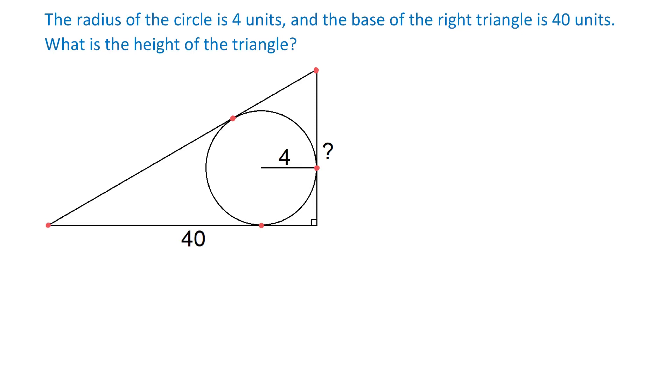In this figure, we have a circle with the radius of 4 units that is inscribed in a right triangle. If the base of this triangle is 40 units, then what is the height of this triangle?